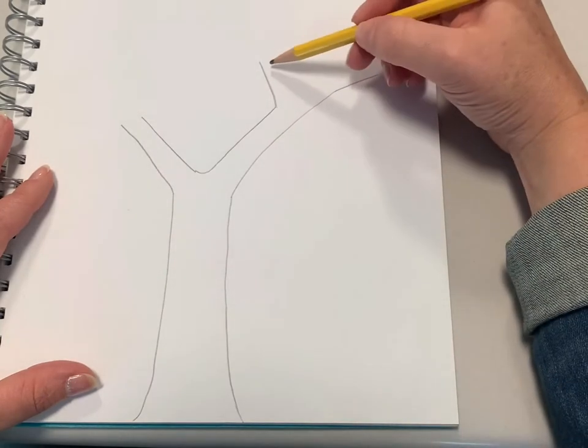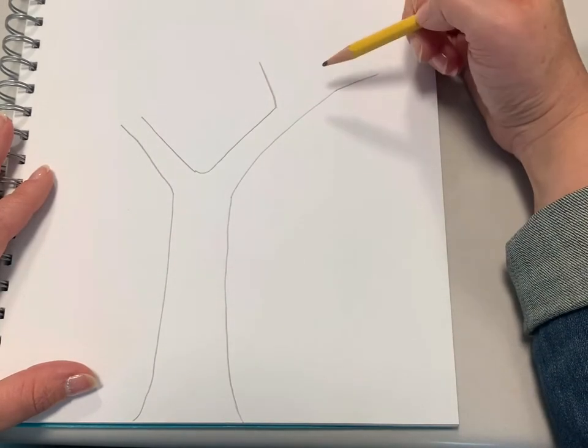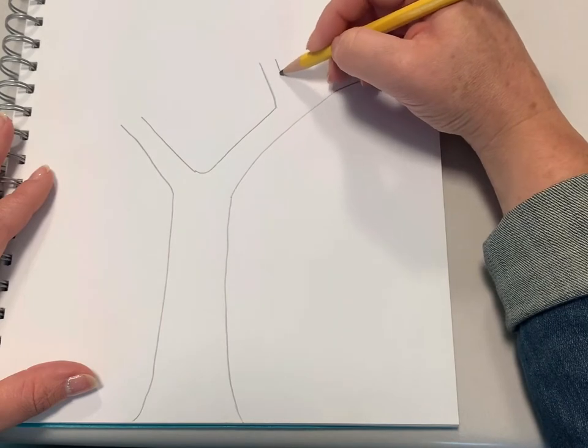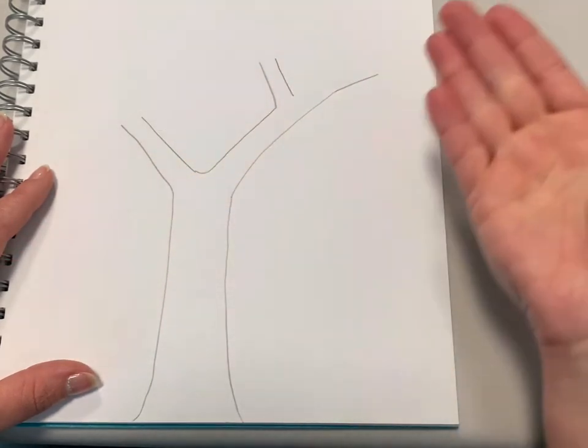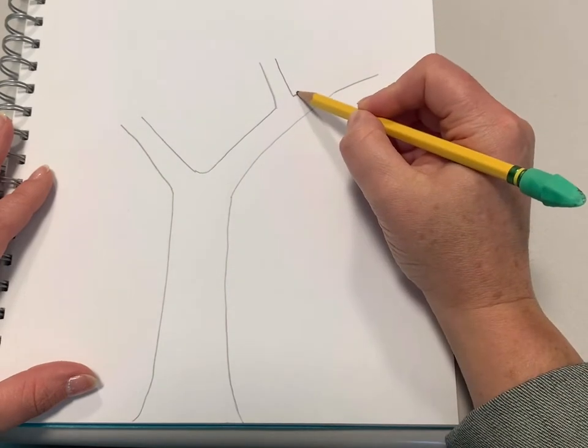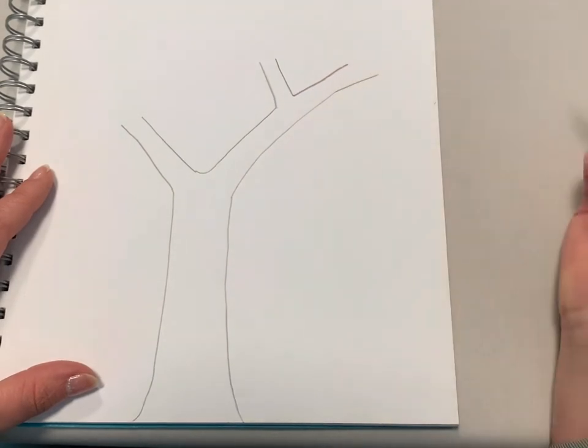But once you add the second line, the copycat line, it starts to look more like a real tree branch. It might take a little practice. So we're going to follow this and now we have three branches that come out of our main trunk: one, two, three.